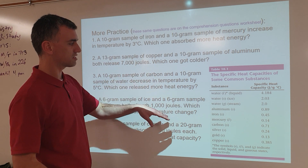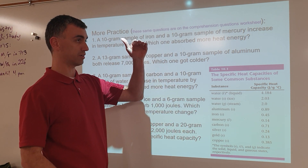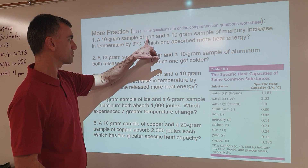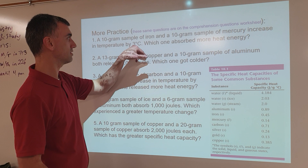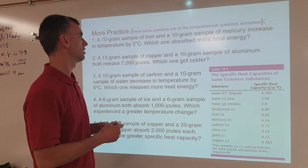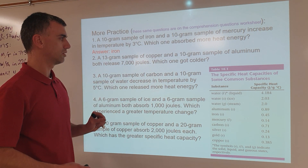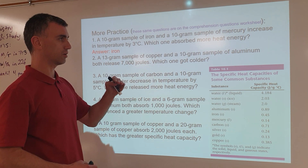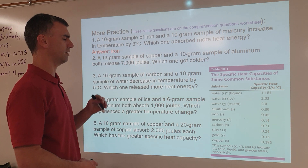So which one absorbs more heat energy? Since something with a higher specific heat capacity needs to absorb more joules to go up by one degree Celsius, iron with its higher specific heat capacity would have to absorb even more joules to go up by three degrees Celsius compared to mercury going up the same amount. So the answer is iron, because it absorbs more joules per degree compared to something with a lower specific heat capacity like mercury.